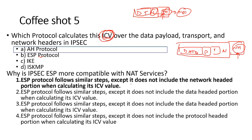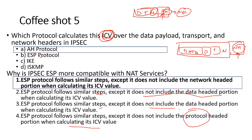Option A says ESP follows similar steps except it does not include the network header portion when calculating the ICV — that makes sense. Option B says it does not include the data header portion — not true. Option C says the same but for data header portion when calculating ICV — also not true. Option D says it does not include the protocol header portion — but it does include protocol information. The answer is A because ESP does not include the network header, and the router uses the network header to replace the private IP with a public IP.